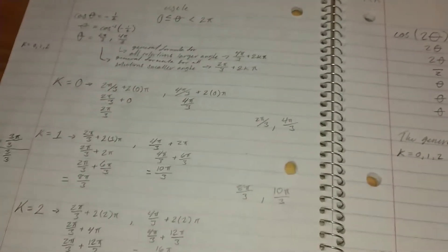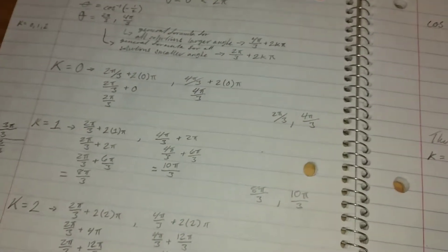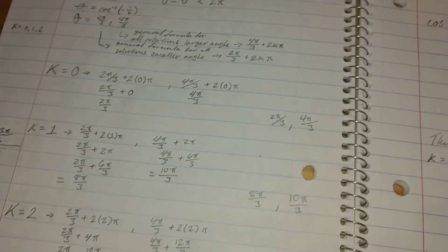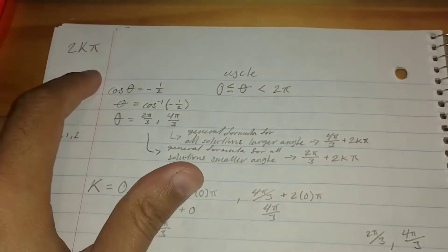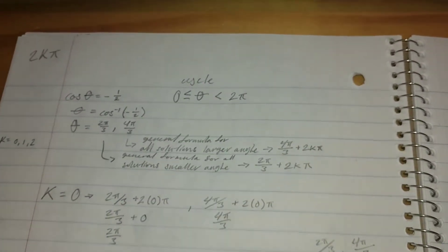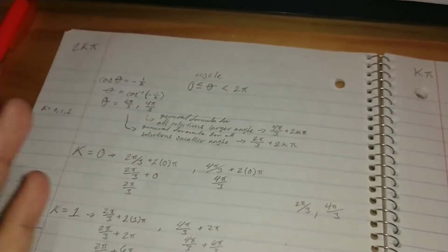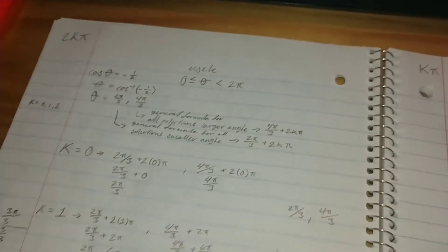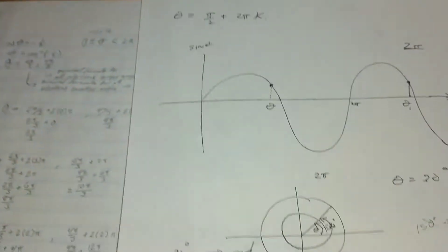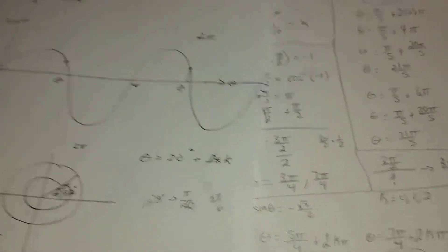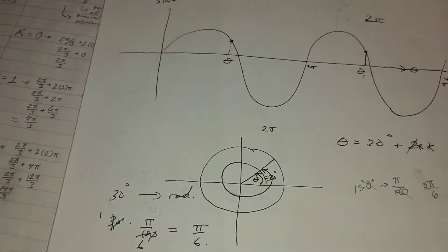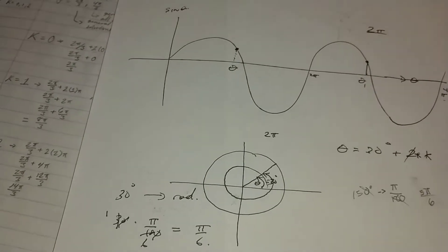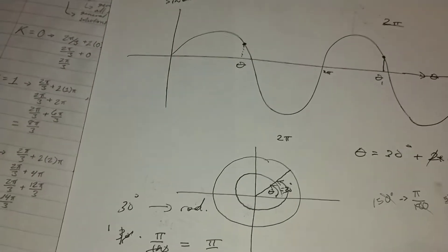I usually don't do math videos or school videos, but I'm making this because people have gotten stuck on 2kπ and kπ — what the heck does that mean? You're thinking of the compression and stretch of a wave and all that. I'm making this because you can see my handwriting and how it's so different from some other people's handwriting, and there were tutors who couldn't figure out how to help with this homework.